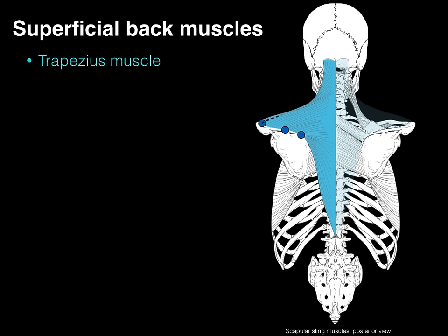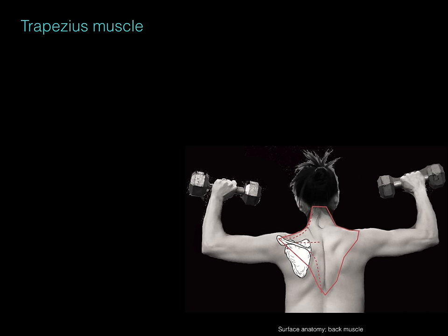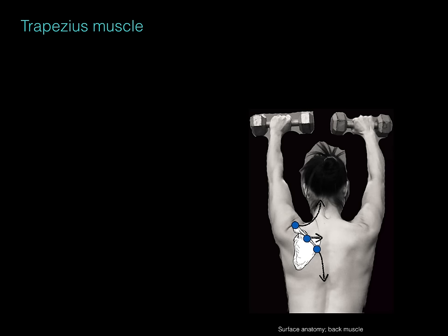Looking at all three fiber orientations together: more medially the fibers pull the scapula down, more laterally they pull the scapula up, but if all fibers contract at the same time, you get a rotational movement of the scapula that goes along with the scapulothoracic rhythm. There's an outline of the trapezius showing those three different orientations — when the muscle contracts, it helps to move and rotate the scapula up, as in reaching above your head.